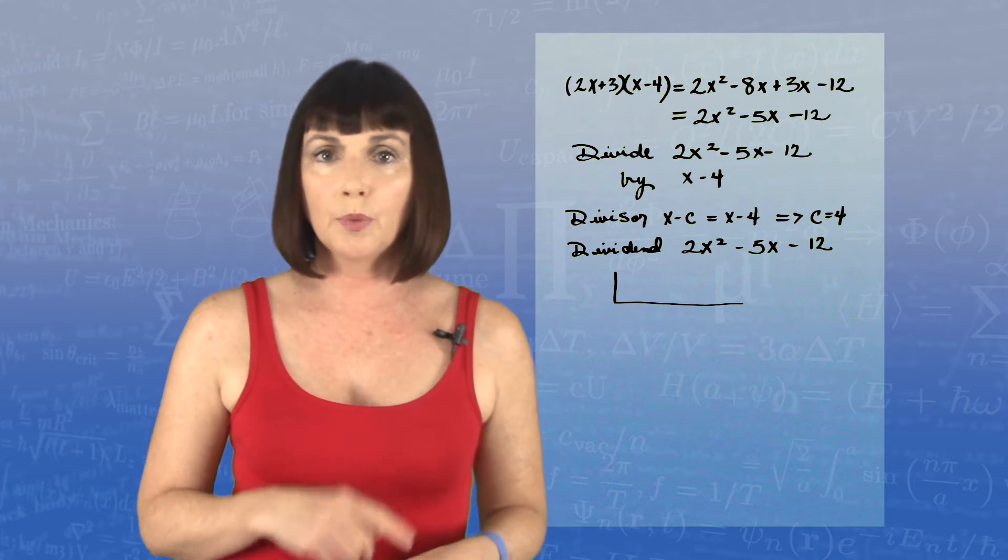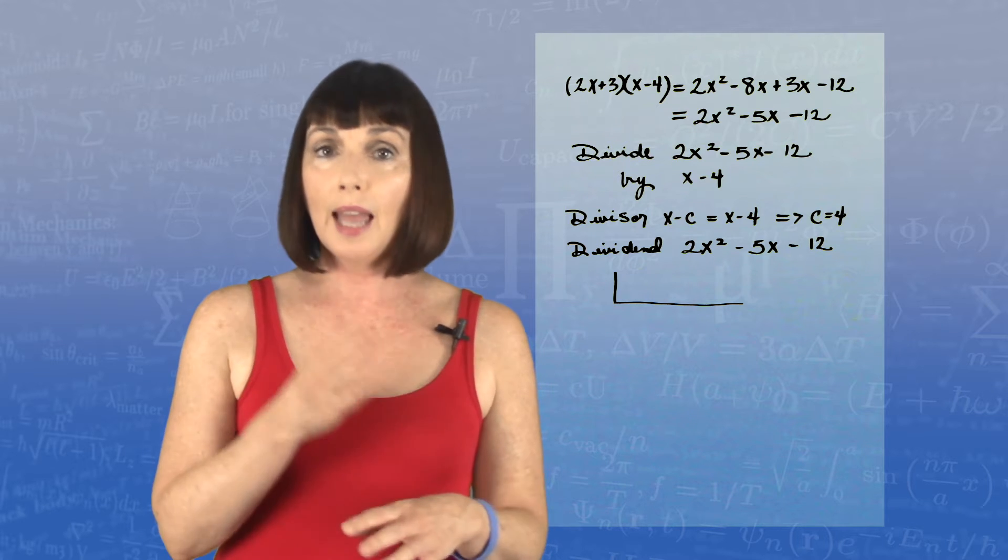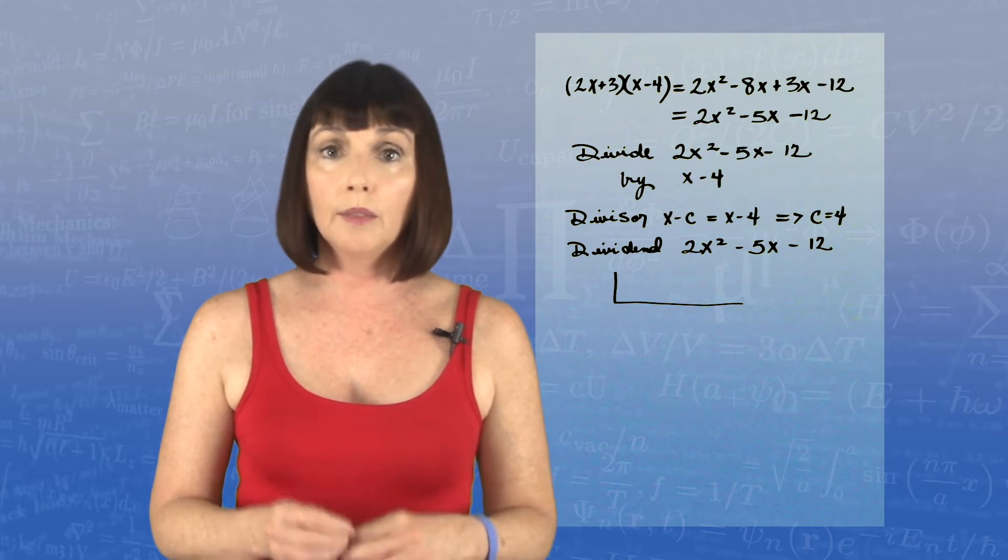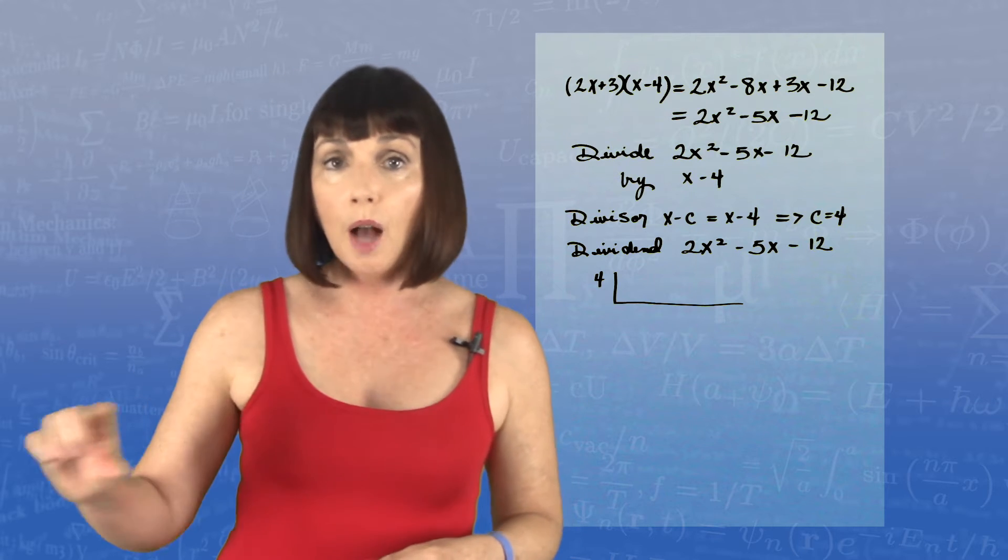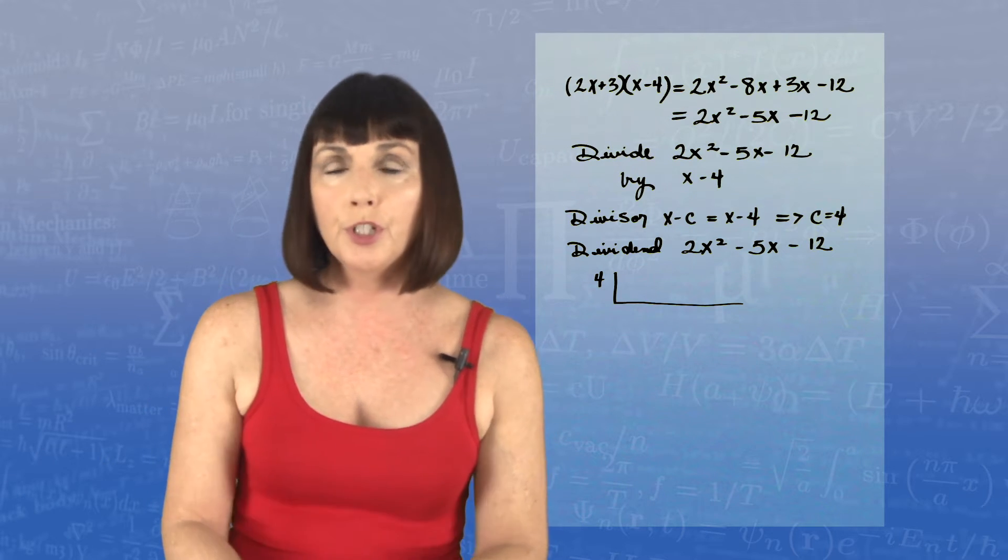We're going to write it out like this. We're going to write the lines. On the outside, you put c. So in this case, we put 4 on the outside. And then on the top row, you put the coefficients of the dividend.